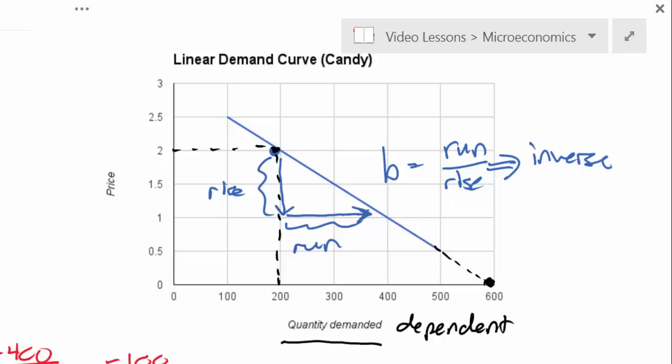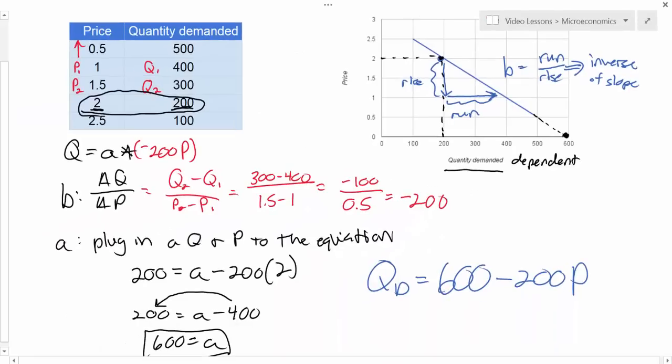This is why we say it's the inverse of slope. You learned in grade 8 or 9 that the slope is rise over run, but the b variable in our demand equation is the inverse of slope, that's the run over the rise. So that, ladies and gentlemen, is how you determine the equation for a linear demand curve.